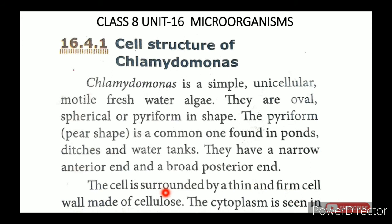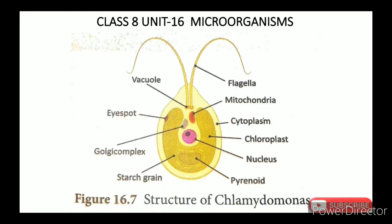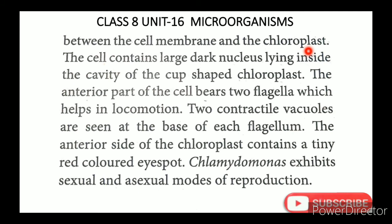The cell is surrounded by a thin, firm cell wall made of cellulose. The cytoplasm is seen between the cell membrane and the chloroplast. The cell contains a large, dark nucleus lying inside the cavity of the cup-shaped chloroplast. The anterior part of the cell bears two flagella which help in locomotion.